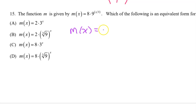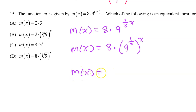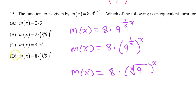Number 15: m of x equals 8 times 9 to the x over 3 power, and x over 3 is the same thing as 1 third x. All answer choices have x by itself on the outside, so m of x equals 8 times 9 to the 1 third power all raised to the x power. 9 to the 1 third power is the cube root of 9, so the answer is 8 times the cube root of 9 all raised to the x power. The answer is d.